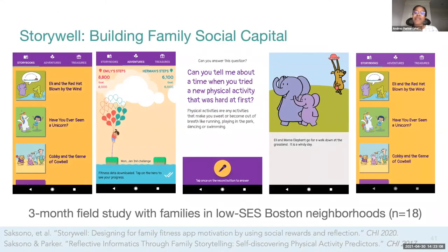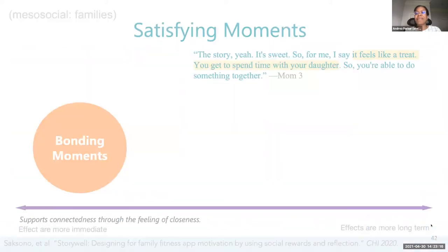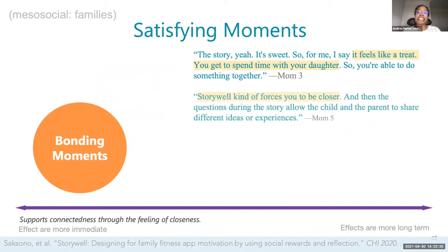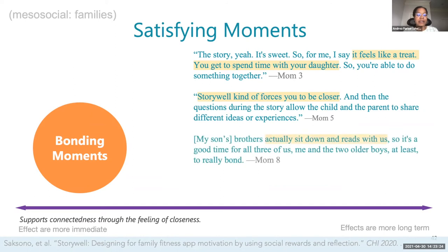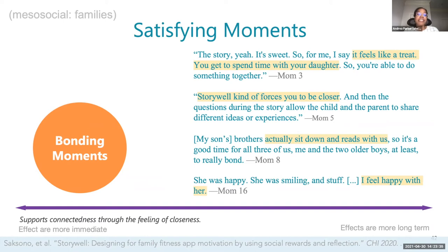We conducted a three-month study to evaluate engagement with StoryWell with low SES families in Boston neighborhoods. One of our key findings was that StoryWell succeeded in building caregivers' interest and motivation to use the system, in large part because it provided three kinds of satisfying moments for caregivers to have with their children. These moments helped nurture connectedness within the family — a social process that is key for supporting intrinsic motivation to use a fitness promotion technology. First, it provided bonding moments as caregivers felt closer to their children through completing family fitness challenges, unlocking social rewards, and responding to reflection questions. Connectedness was supported as caregivers noticed their child's positive emotions while spending time together.